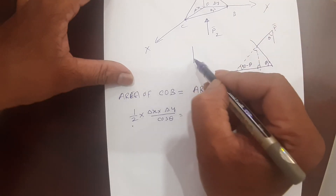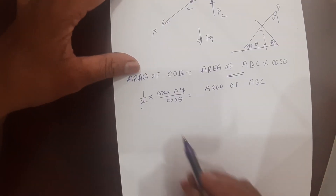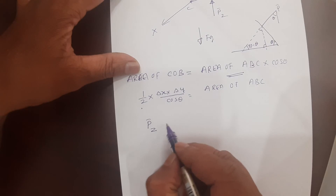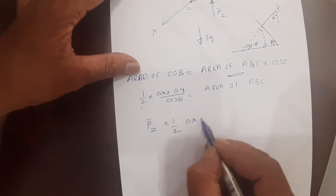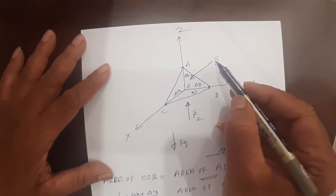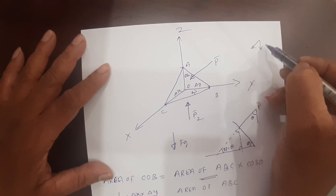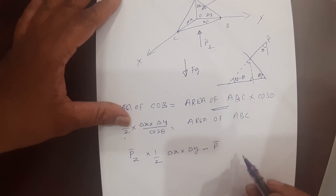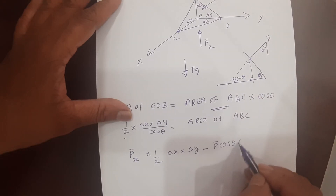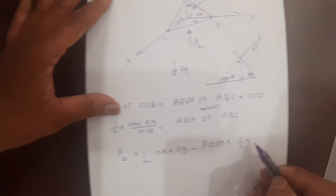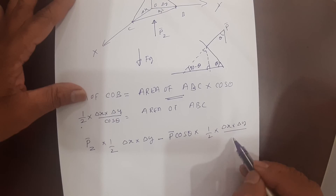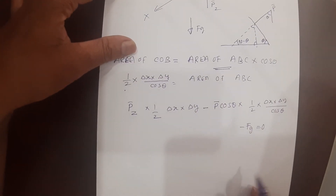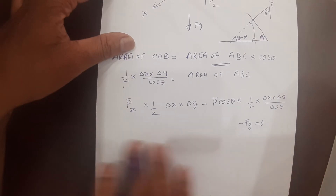There is also a gravitational force acting in the downward direction, given by F_G. P-bar-z is acting on plane COB, where area of COB = (1/2) × delta-X × delta-Y. Since P-bar-z acts from the top, resolving this force gives one component downward. So the equation becomes: minus P-bar × cos(theta) × (1/2 × delta-X × delta-Y / cos-theta) minus F_G = 0.